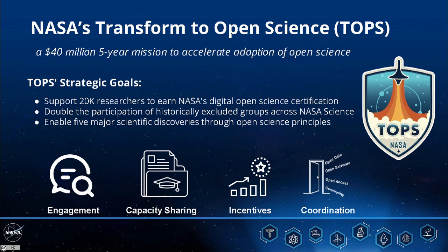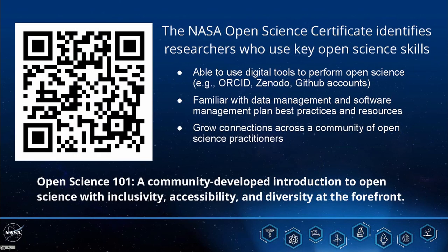We know we need a more equitable scientific future where more people participate in science — not just in the room, but with a seat at the table, because only then will we find the best solutions. During the 2023 year of open science, we'll be holding workshops, publishing articles, designing incentives, and coordinating activities across NASA and other agencies. Scan the QR code to sign up to earn a NASA open science digital certification by completing a community-developed curriculum with inclusivity, accessibility, and diversity at the forefront. NASA is also holding workshops, in-person and virtual summer schools, and other events.